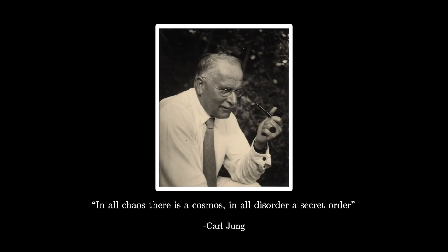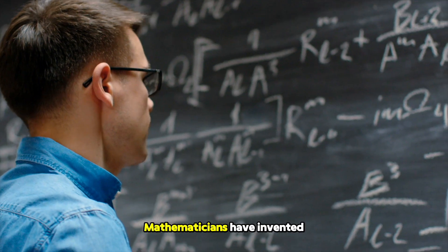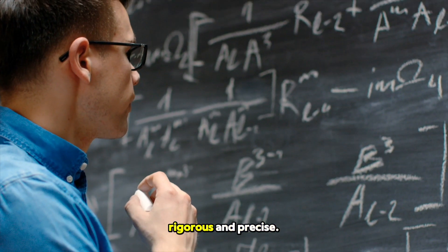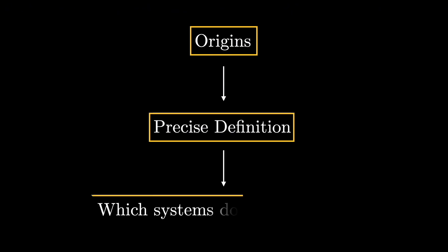Despite the term's rich history and deep connection to philosophy and religion, mathematicians have invented their own notion of chaos. And unsurprisingly, it is incredibly rigorous and precise. Here we will learn about the origins of this precise notion of chaos, what its definition means, and just what types of interesting systems it applies to.